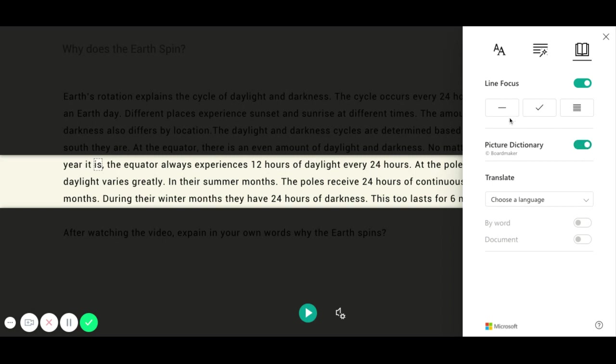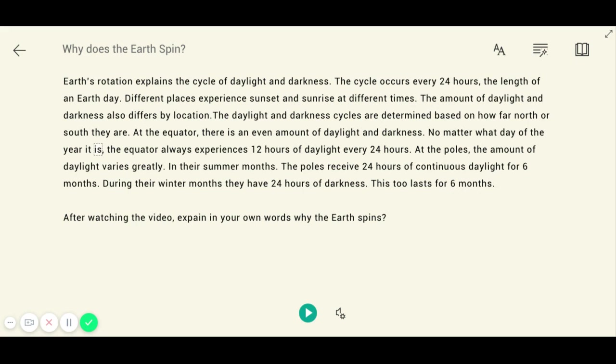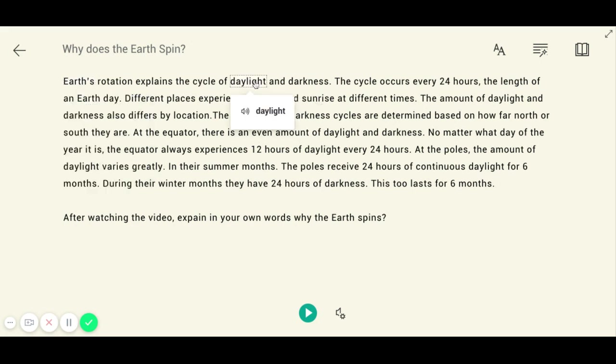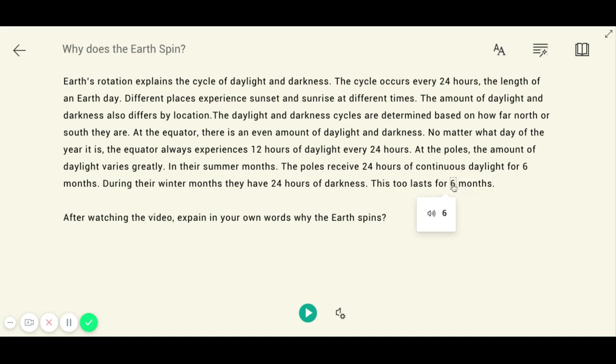The picture dictionary is on. I can click on different words to get a picture. Let's do Earth. You can see Earth. I can listen to it. Daylight doesn't have a picture. Darkness does though. Certain words will have pictures, others will not. Months does not. Six does not. Hours will have a picture. Some of these will have pictures, others will not.